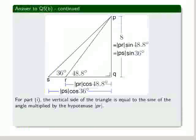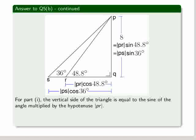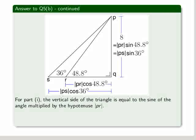Let's redraw it. So here we're redrawing the diagram. This time we're sticking in values for the sides and bases of the triangle in terms of the sines of the angle. So for part 1, the vertical side of the triangle is equal to the sine of the angle multiplied by the hypotenuse PR.